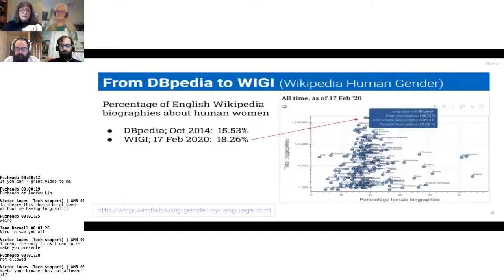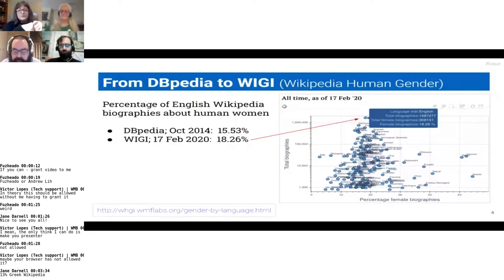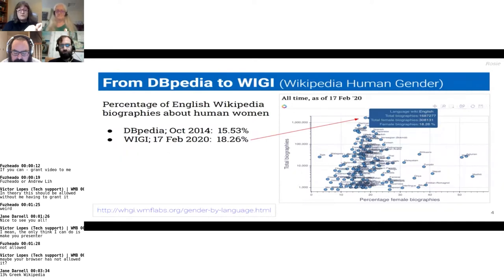In early 2015, while Roger and I were making plans to launch Women in Red, we met with Max Klein, who had a measurement tool in development — he called it WHGI, for the Wikipedia Human Gender Index — and it used Wikidata to provide statistical information regarding gender by Wikipedia language. It gave us updates about our outcomes approximately every two weeks.